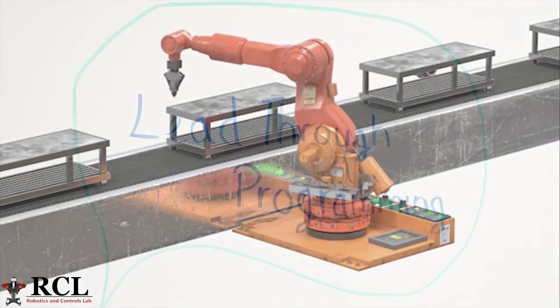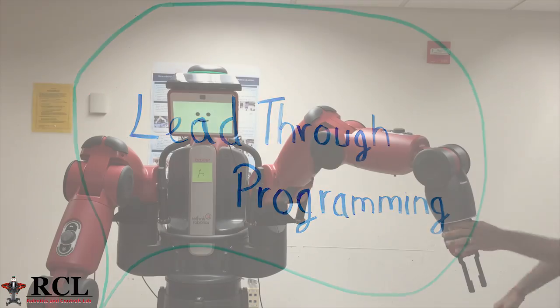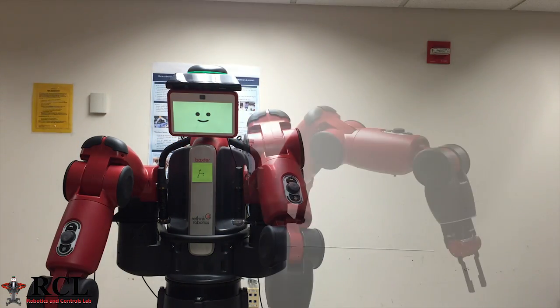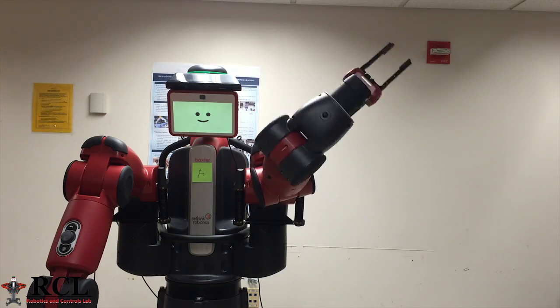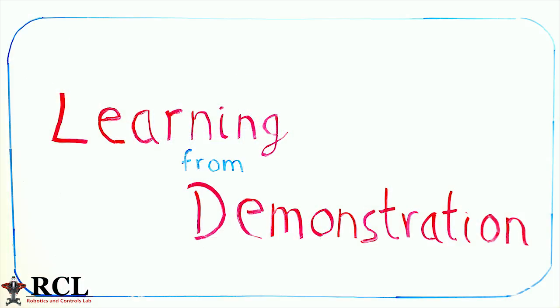The next method is lead through programming. In this method, a person will lead the robot manually through the desired positions. The robot will store these positions and repeat the movements using a motor controller. The third method of programming is learning from demonstrations.